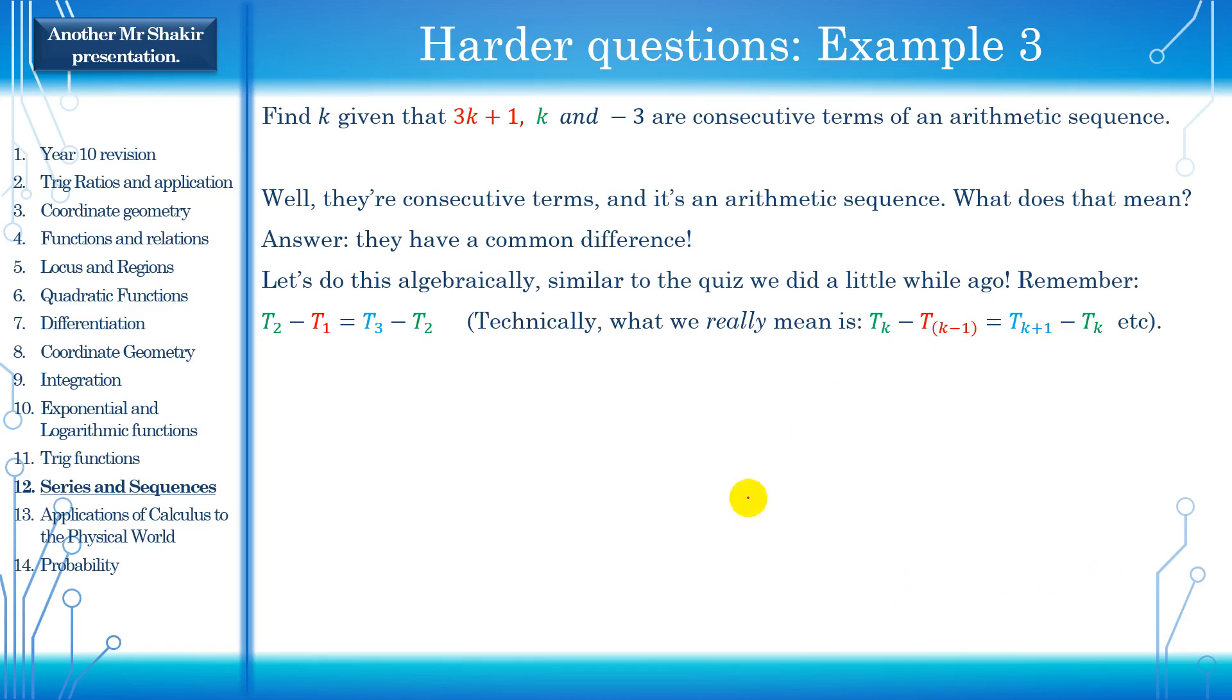So the second term minus the first term has to equal the third term minus the second term. Now, I've color-coded it just to make things a little easier. So the second term, the one in the middle, would go first, tk, kth term, minus t of k minus 1. That is k minus 1th term, or t1. And the third term minus the second term, the third term minus the second term. And we substituted the correct stuff in, and we just solve it. k is equal to 2. That's a pretty simple algebraic equation. I'm sure you can do it without much help from me.